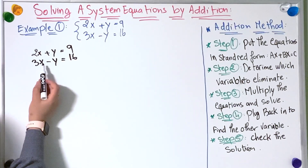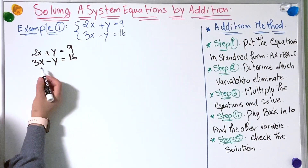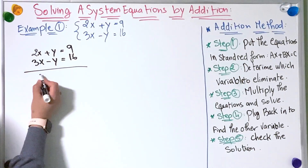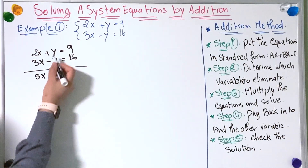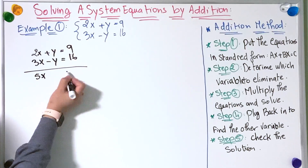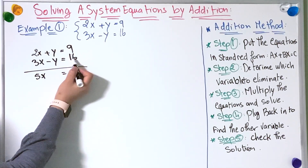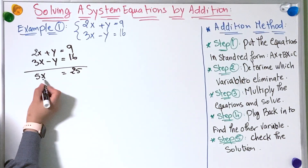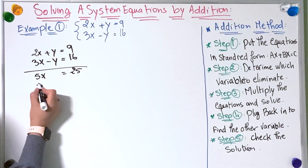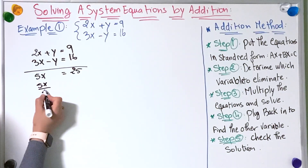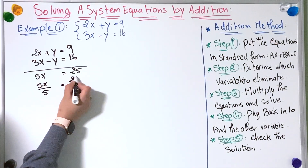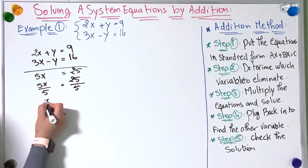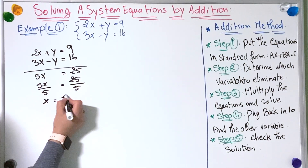Now I'm going to add the equations. So I have 2x plus 3x equals 5x, and plus y minus y equals 0, and 9 plus 16 equals 25. To find x I'm going to divide both sides by 5, so 5x divided by 5 equals 25 divided by 5, so x equals 5.